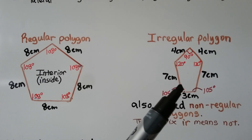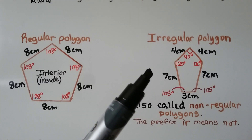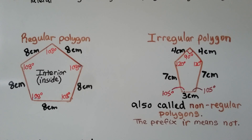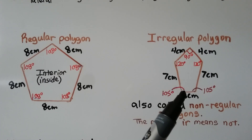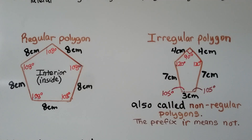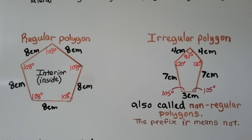This pentagon is an irregular polygon — an irregular pentagon — because the sides are not all the same length. This one's four centimeters, this one's seven, and this one's three. The interior angle measures are all different: this one is 105 degrees, this one's 120 degrees, and this one's 90 degrees. Irregular polygons are also called non-regular polygons. That prefix IR means not — so it's not regular, it's irregular.